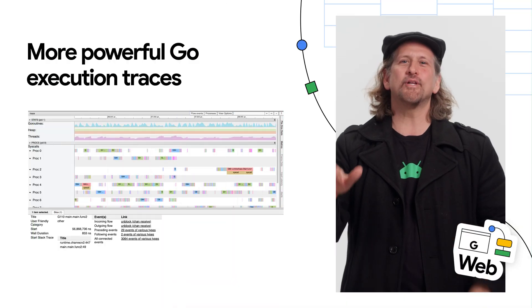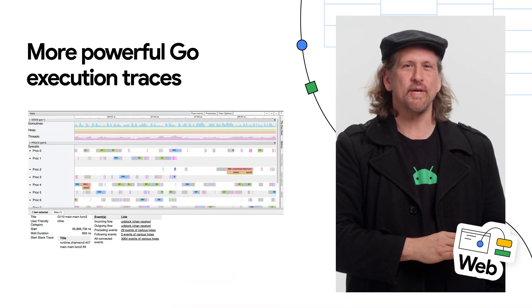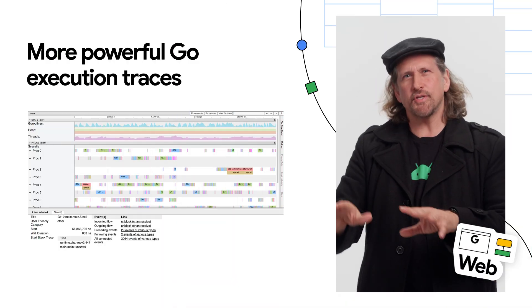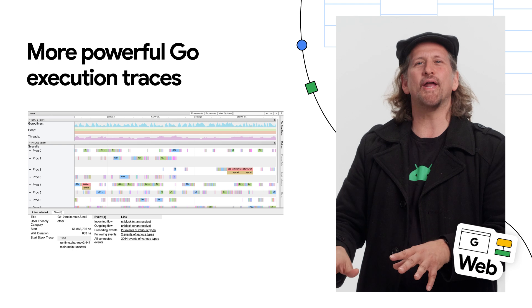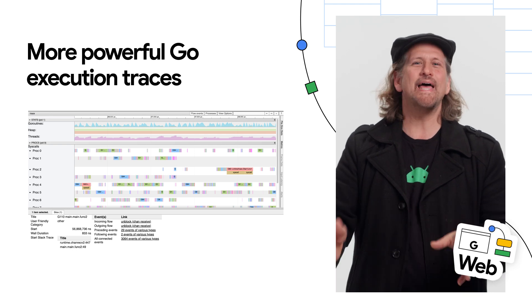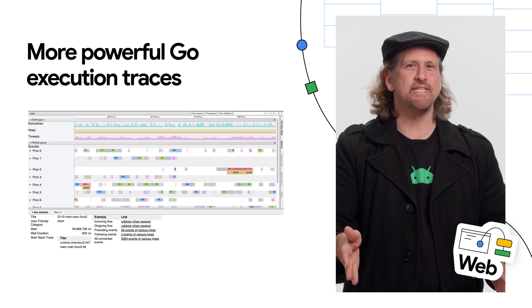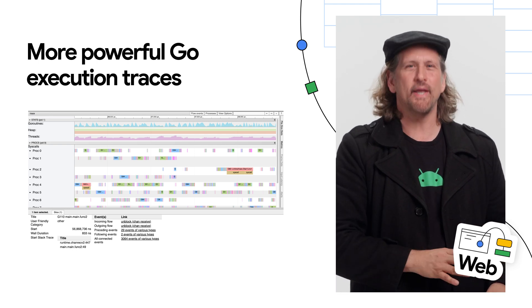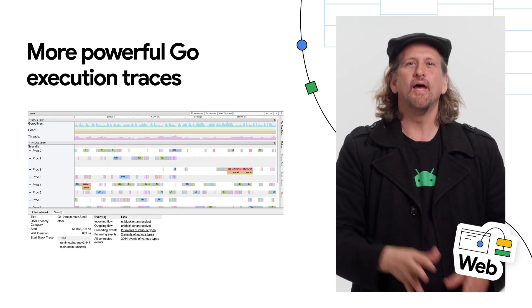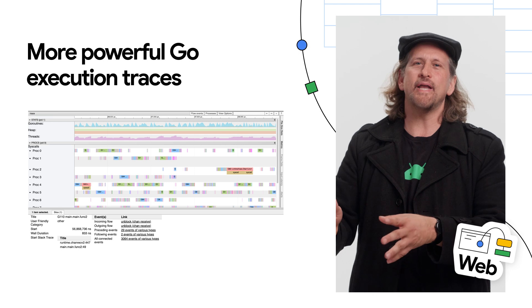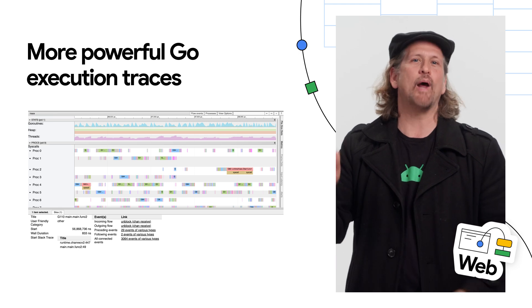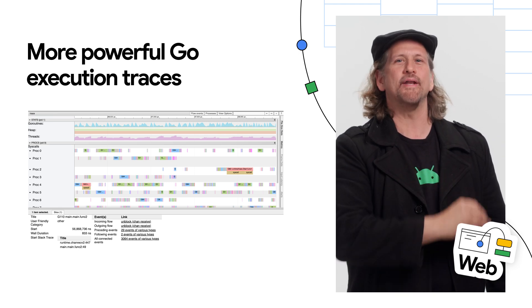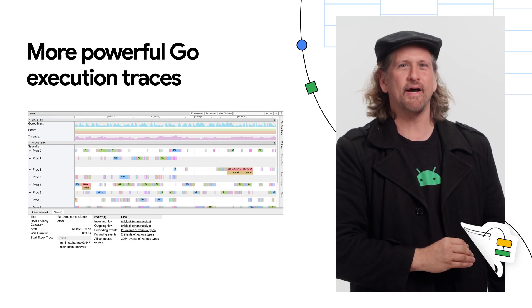Go announced low overhead tracing, reducing the runtime overhead of tracing from 10%–20% CPU down to 1%–2% for many applications. Go also announced experiments around a flight recorder and a trace reader API.